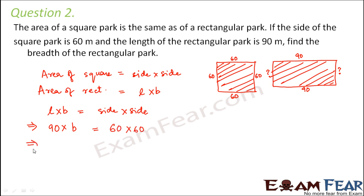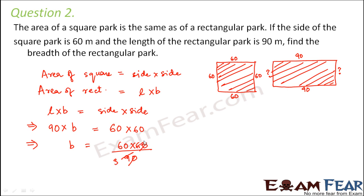So breadth B = 60 × 60 ÷ 90, which equals 40 meters. Therefore, the breadth of the rectangular park is 40 meters.